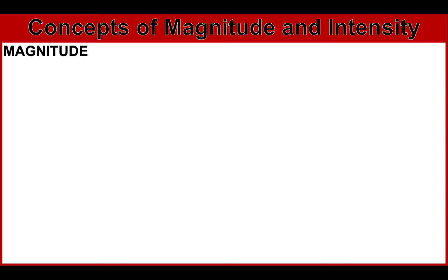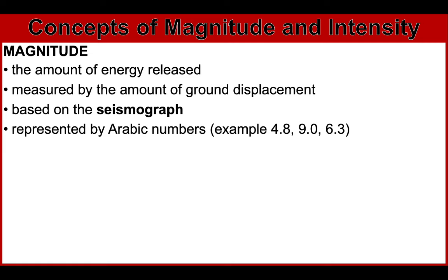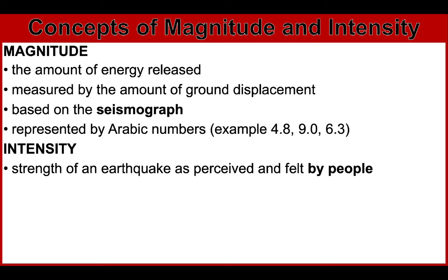The magnitude of an earthquake refers to the amount of energy released. It is measured by the amount of ground displacement based on the seismograph, and is represented by Arabic numbers — for example, 4.8, 9.2, and 6.3. Intensity, on the other hand, is the strength of an earthquake perceived and felt by people. Magnitude is based on the seismograph, while intensity is the strength perceived by people.